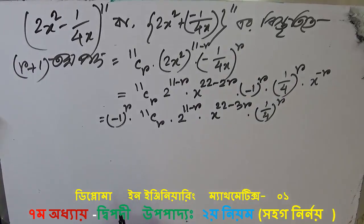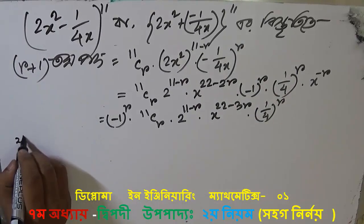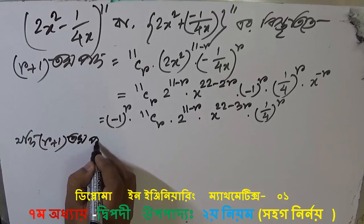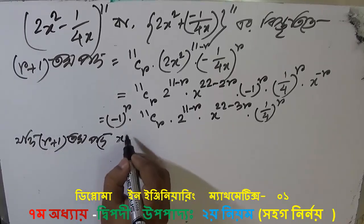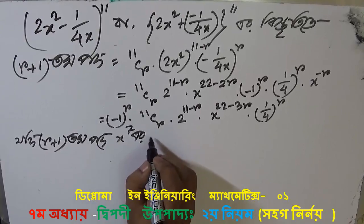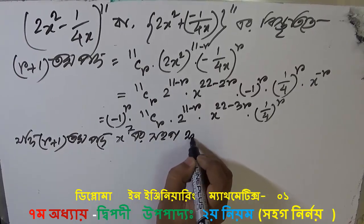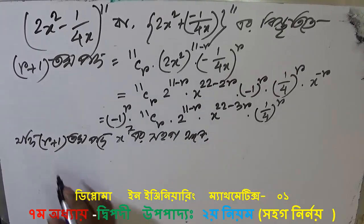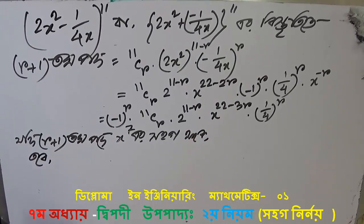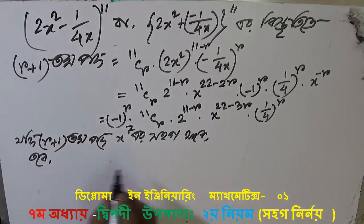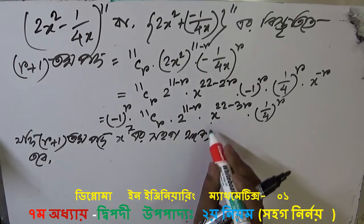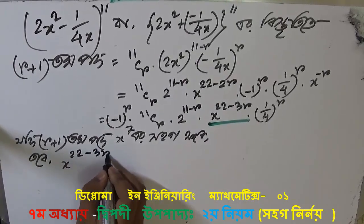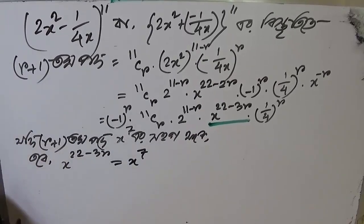Now we should show this again. The power of r must be r plus 1, to the power r. Since the power r is anecdotal, at the power r minus 1, we will accept this again. I will write the same as x to the power 22 minus 3r, minus 7 to the power 7.